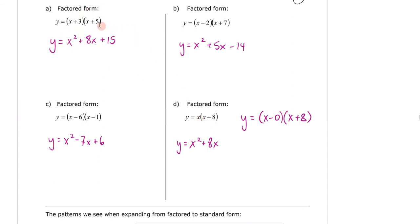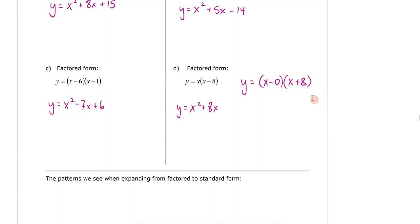You may notice that if I take positive 3 and positive 5 in Part A and add them, I get 8, and if I multiply them, I get 15. If I take negative 2 and positive 7 and add them, I get positive 5; multiplied, I get negative 14. For negative 6 and negative 1: added gives negative 7, multiplied gives positive 6, since two negatives make a positive. And 0 plus 8 gives 8, while 0 times 8 is 0, which is why there's no constant term.